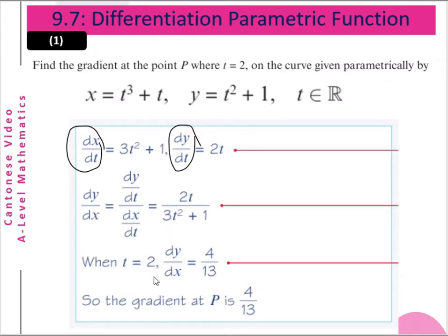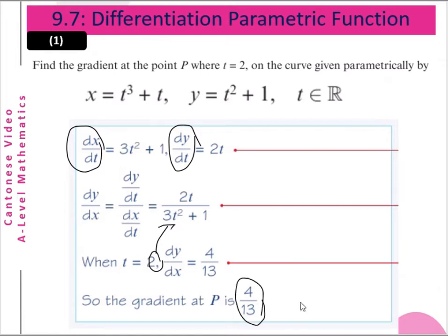When t equals 2, we substitute t equals 2 into the expression. We get dy/dx equals 4 over 13. So the gradient at point P of the curve is equal to 4 divided by 13.